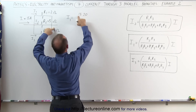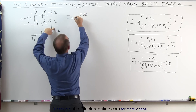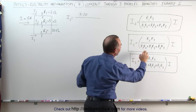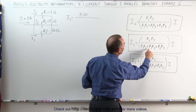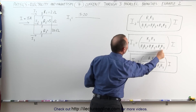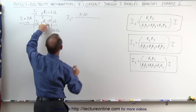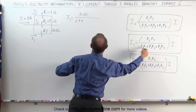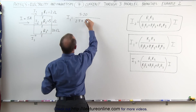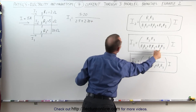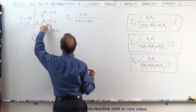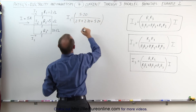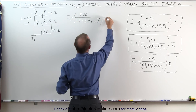So 5 times 20 divided by, in the denominator, the sum of the three products: R1 times R2, R1 times R3, and R2 times R3. So first, R1 times R2 is 2 times 5, plus R1 times R3 which is 2 times 20, plus R2 times R3 which is 5 times 20. And that is all multiplied times the total current, which in this case is 15 amps.